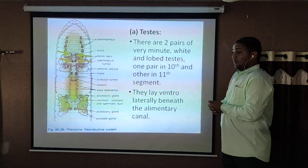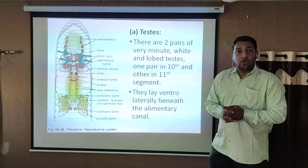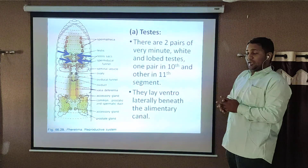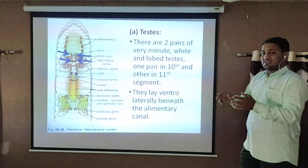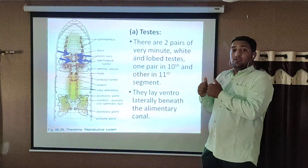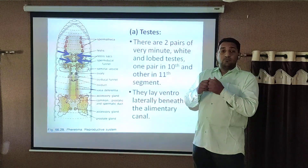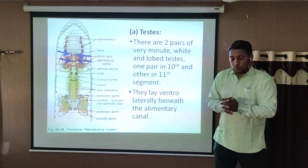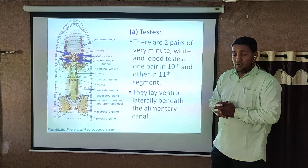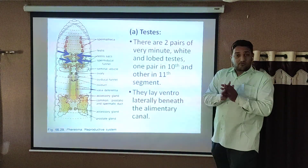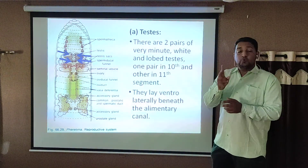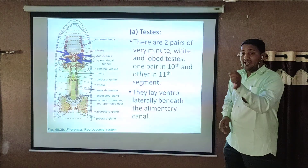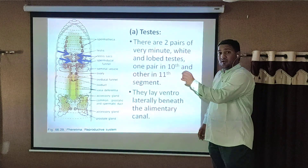Now, the male reproductive organ of earthworm. The first organ is the testis. In most organisms there are only 2 testes, but in earthworm there are 4 — that means 2 pairs of testes present in segment number 10 and segment number 11.